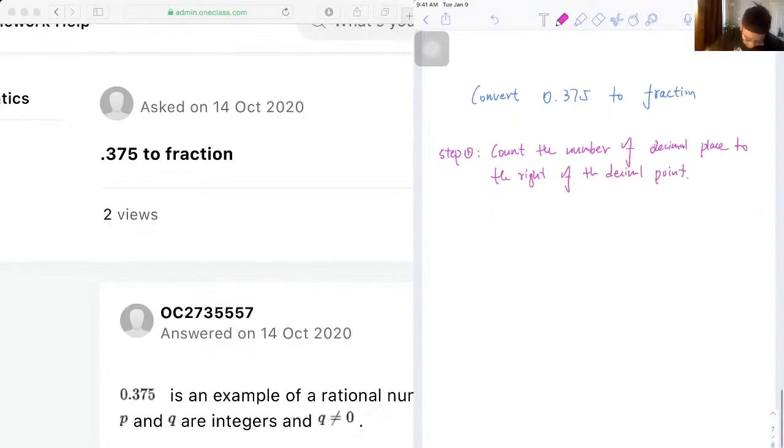Okay, so in our case we got 0.375, so in this case n is equal to 3, okay.